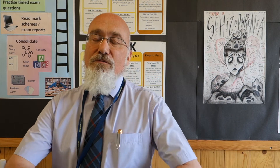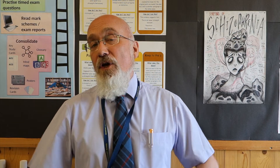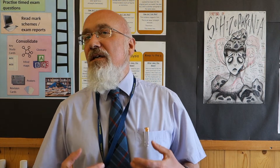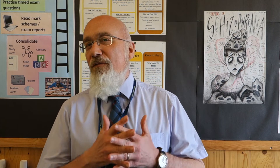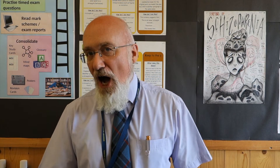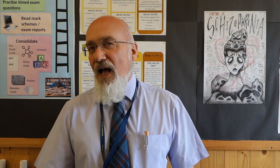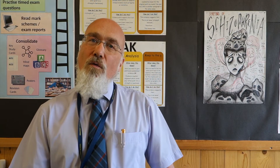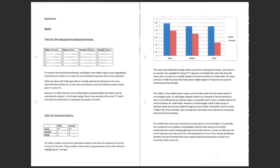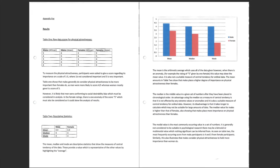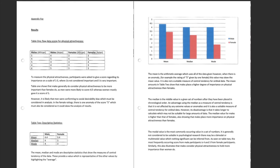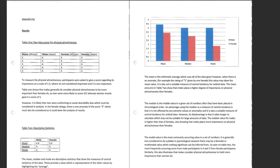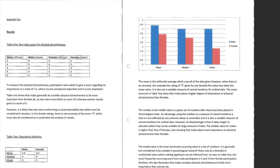The results section contains two main things: descriptive statistics and inferential statistics. Descriptive statistics are very often in the form of a graph — a bar chart, pie chart, or scattergram if it's a correlation. In this investigation, the students have produced a bar chart showing that males score higher than females — the males are the blue bar and the females are the red bar.